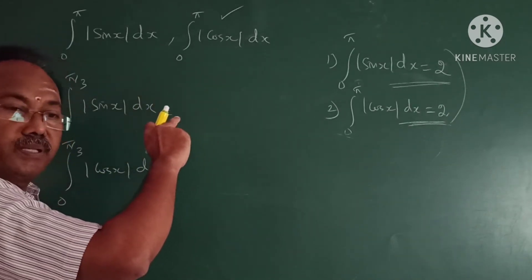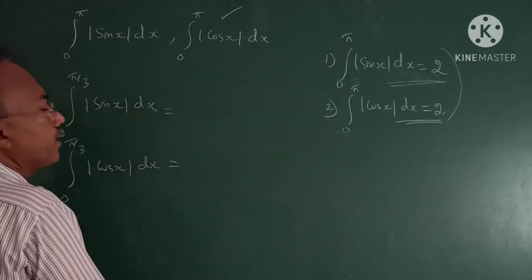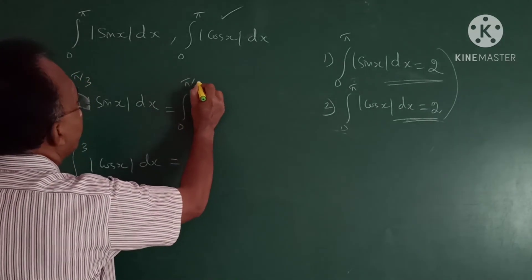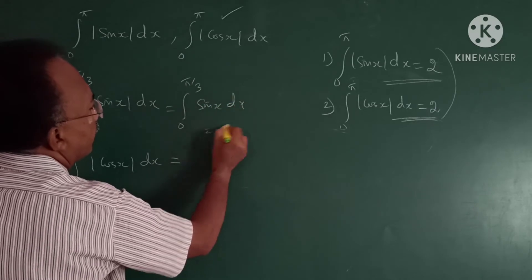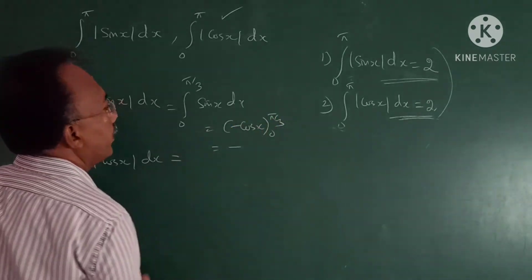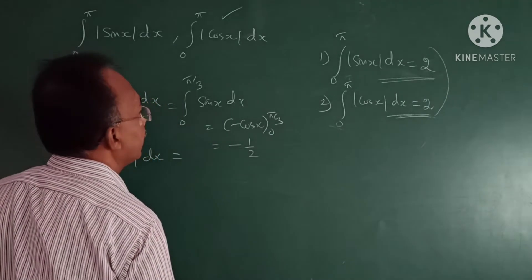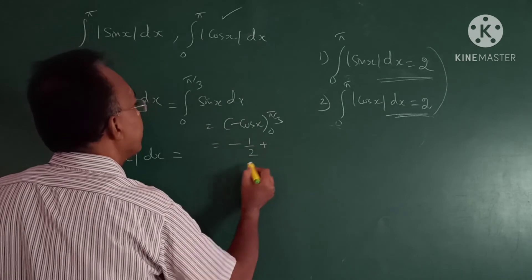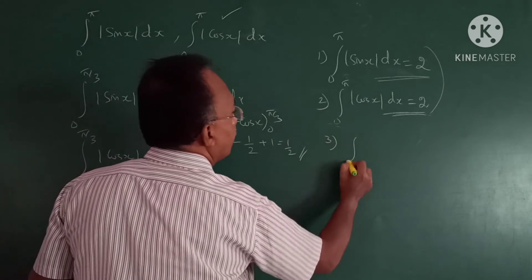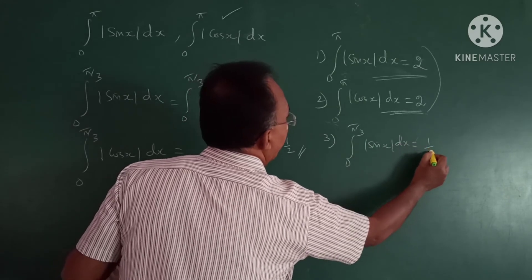For modulus sin x from 0 to π/3: since π/3 is in the first quadrant, modulus sin x equals sin x. So integrate sin x from 0 to π/3, giving minus cos x evaluated from 0 to π/3. Upper limit: minus cos(π/3) = minus(1/2). Lower limit: minus cos 0 = −1. Result: 1 minus 1/2 = 1/2. So the integral of modulus sin x dx from 0 to π/3 equals 1/2.